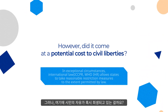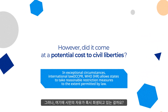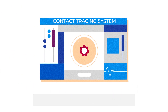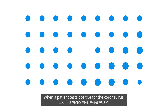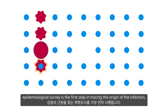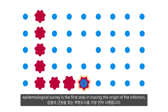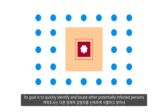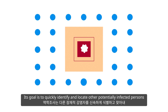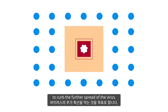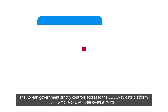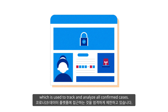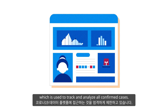However, did it come at a potential cost to civil liberties? Let's first take a look at the contact tracing system in Korea. When a patient tests positive for the coronavirus, an epidemiological survey is the first step in tracing the origin of the infection. Its goal is to quickly identify and locate other potentially infected persons to curb the further spread of the virus. The Korean government strictly controls access to the COVID-19 data platform, which is used to track and analyze all confirmed cases.